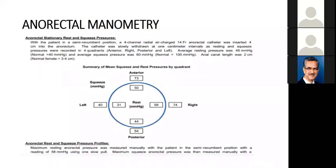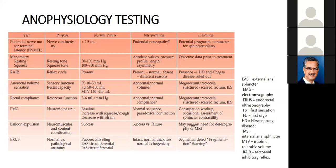The image in this slide shows anorectal stationary resting and squeezing pressures. The patient is in a semi-recumbent position, and the pressures at anterior, posterior, right, and left positions are assessed both at rest and on squeezing. Various anorectal physiological tests include pudendal nerve motor terminal latency testing, manometry resting and squeezing pressures — their normal values and interpretations are shown in the slide.